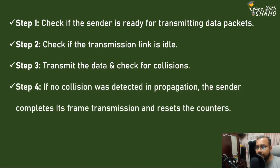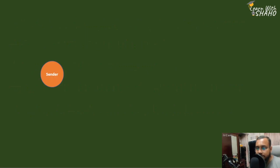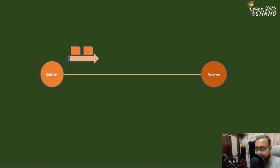If no collision is detected during propagation, the sender completes the frame transmission and resets the counter. After the collision is handled, the sender is ready again. If another sender wants to transmit on the same network at the same time, a collision may occur.